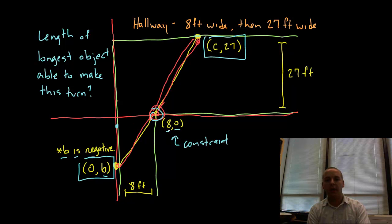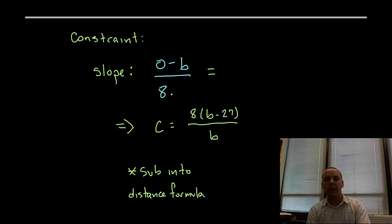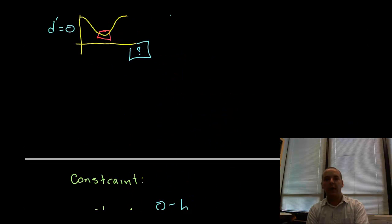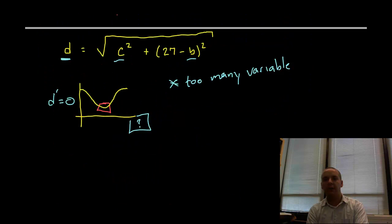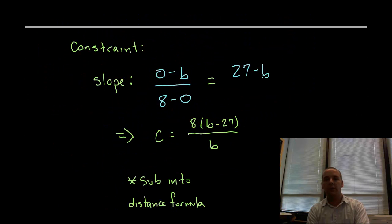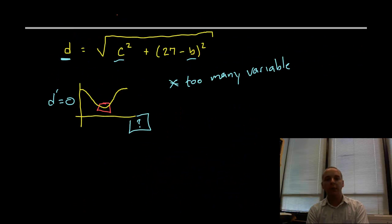So for our constraint we'll have Y2 minus Y1 divided by X2 minus X1, so that would be (0 minus B) divided by (8 minus 0). That should match the slope between the outer two points, (27 minus B) divided by (C minus 0). So I went ahead and fast forwarded through the algebra here. If you solve this for one of the variables in terms of the other, you would get this equation right here. Now why do we do that with this example? Well the same reason as we do it for every other optimization problem. You want to go back up to this formula right here that had too many variables, and we want to sub out one of these variables in terms of the other guy, so that it will be just one independent variable.